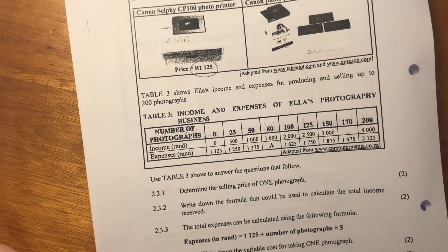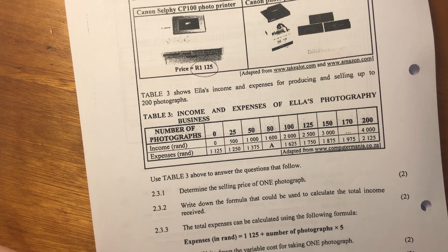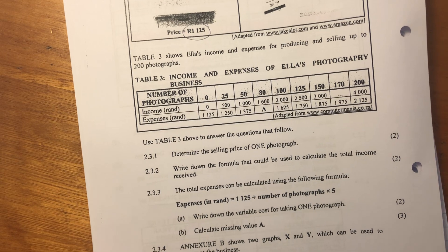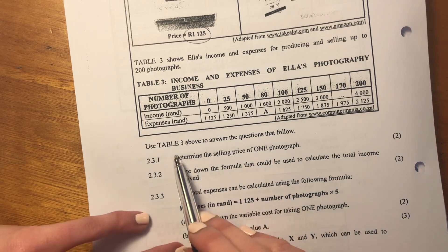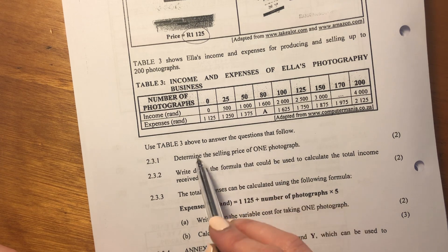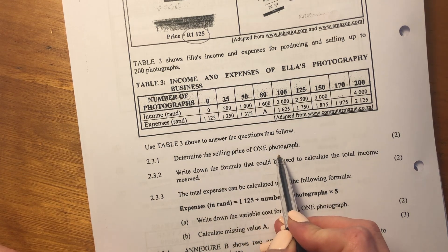It's very finance-based, but it's actually quite intuitive. We just need to understand what exactly they're asking us. Again, if you don't understand the scenario, go to the questions. It will help steer your thought. So it says, use table three above to answer the questions that follow. Determine the selling price of one photograph.